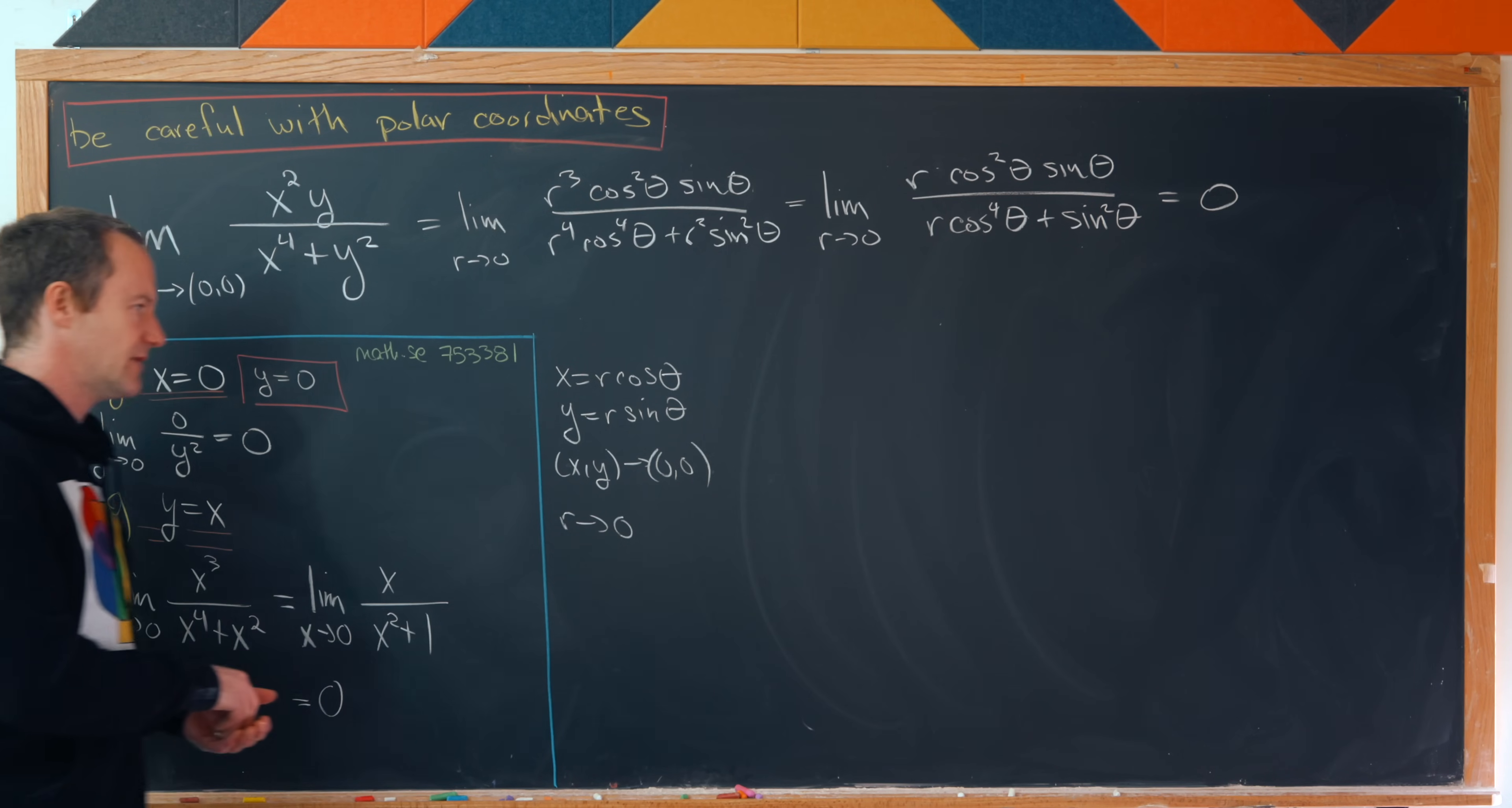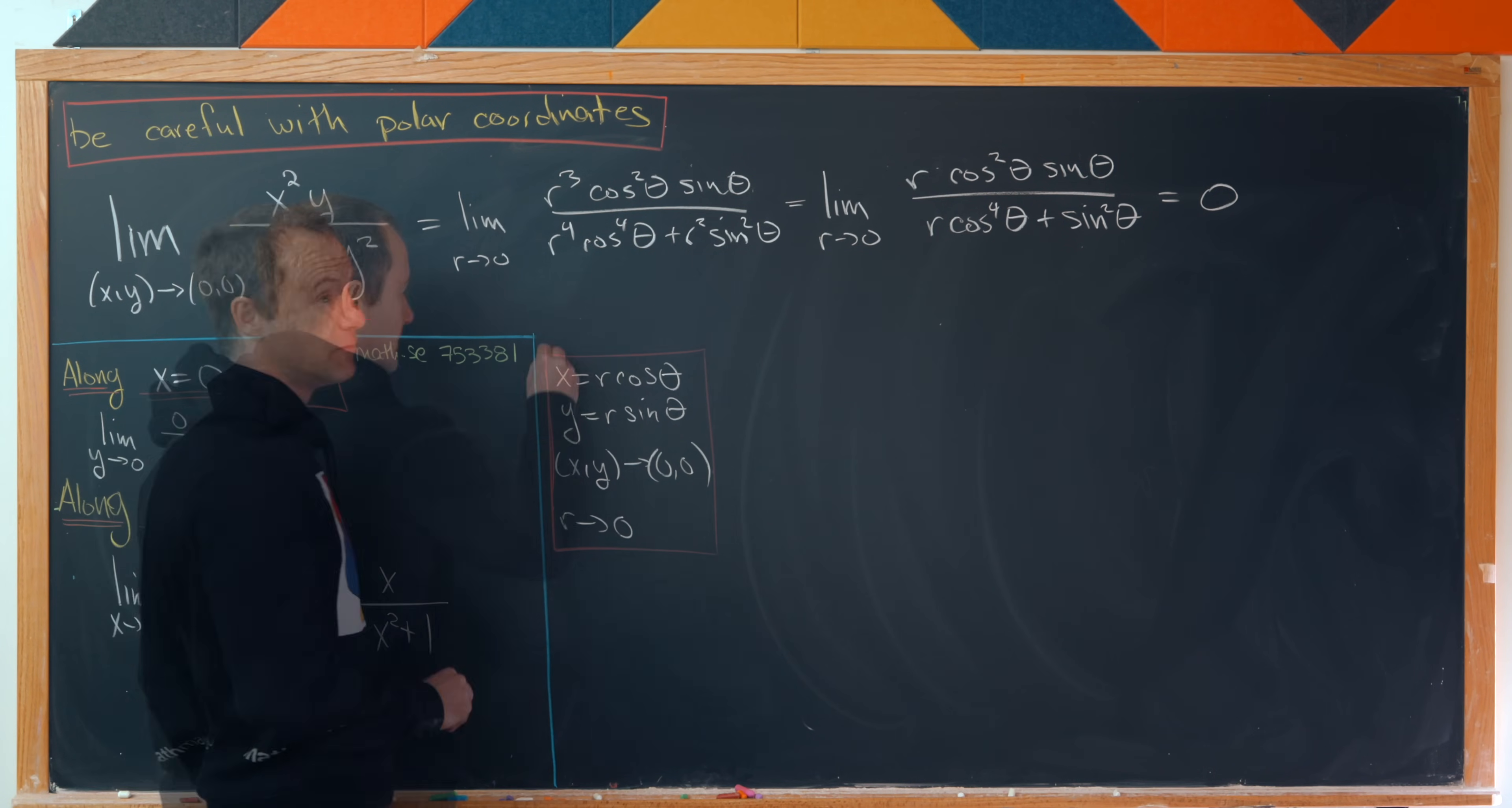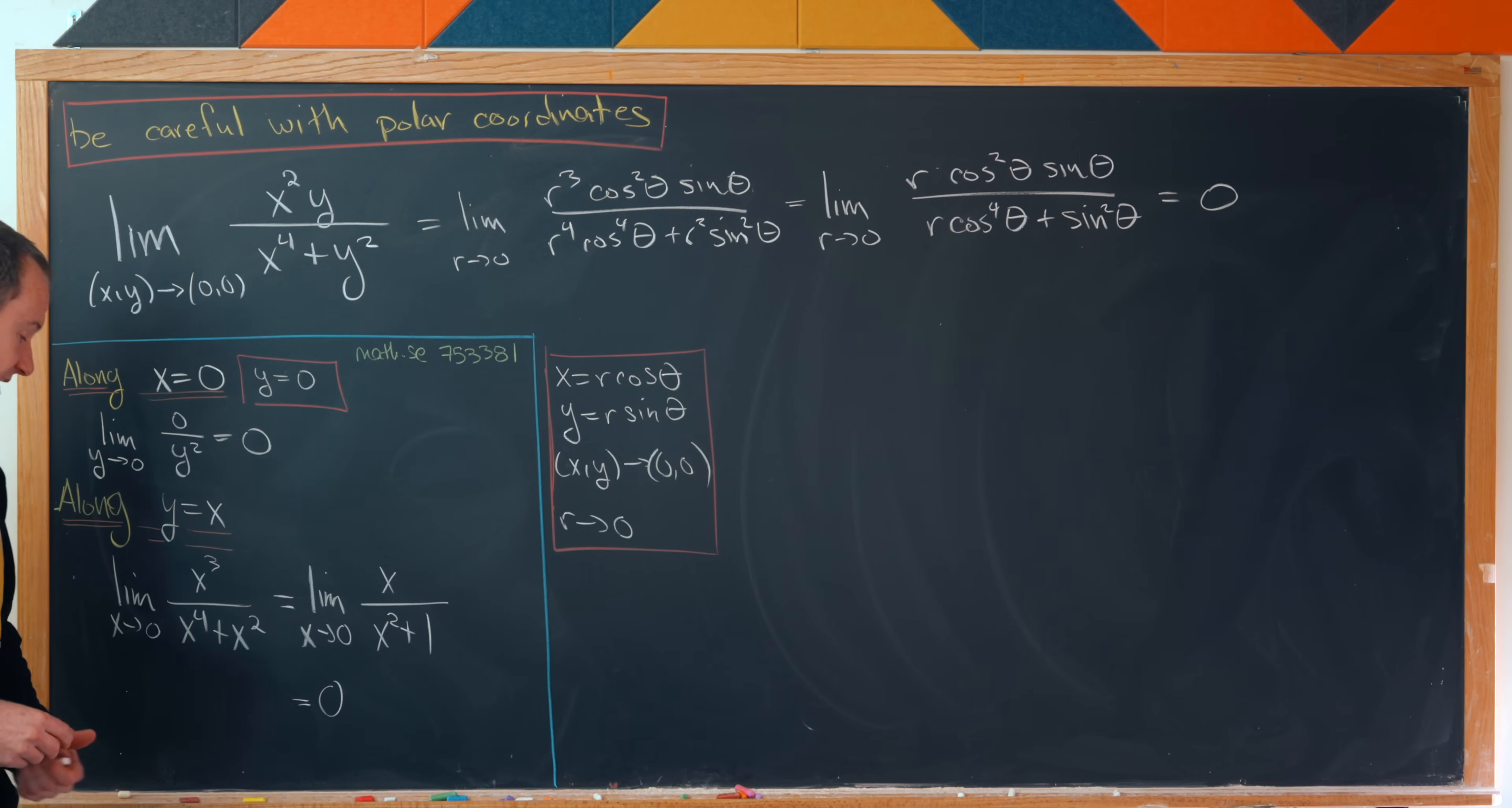Okay, so that's good. So that means the value of our limit is in fact zero. But in fact that's incorrect. And we can see that it's incorrect by taking a path along one more curve.